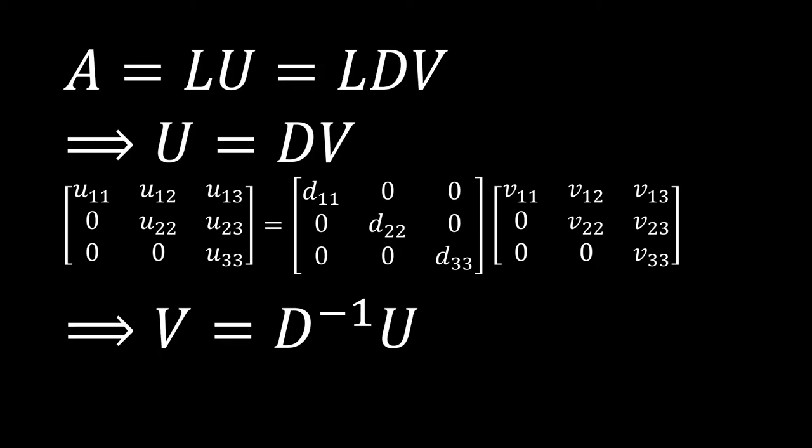So how did we do our LDV matrix decomposition? Let's just quickly review that. Well, we set it equal to our LU decomposition and used a comparison of LU to LDV to help us out, where then we went ahead and set U equal to DV and found this relationship, and then we were able to exploit that to do our LDV matrix decomposition.